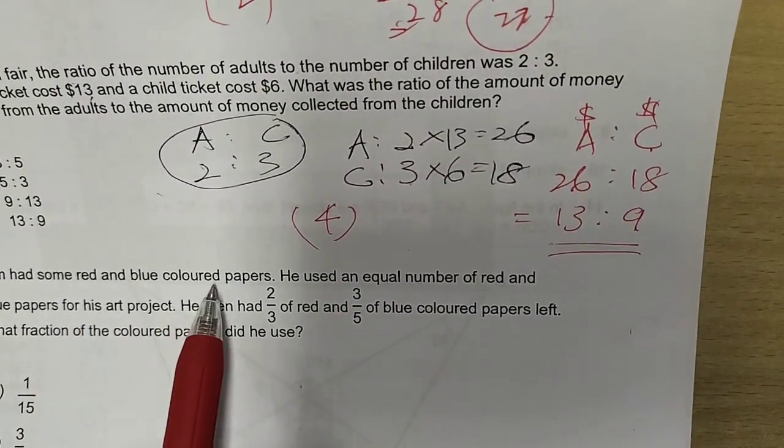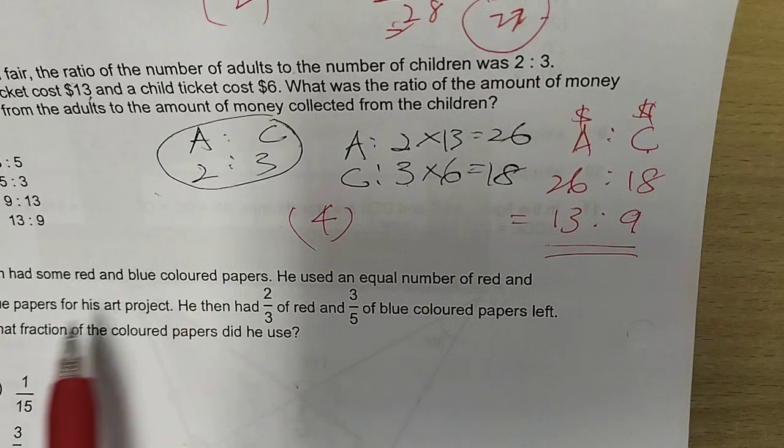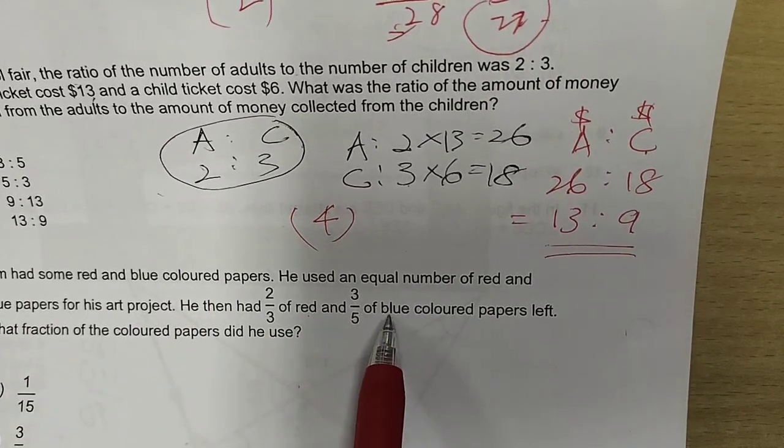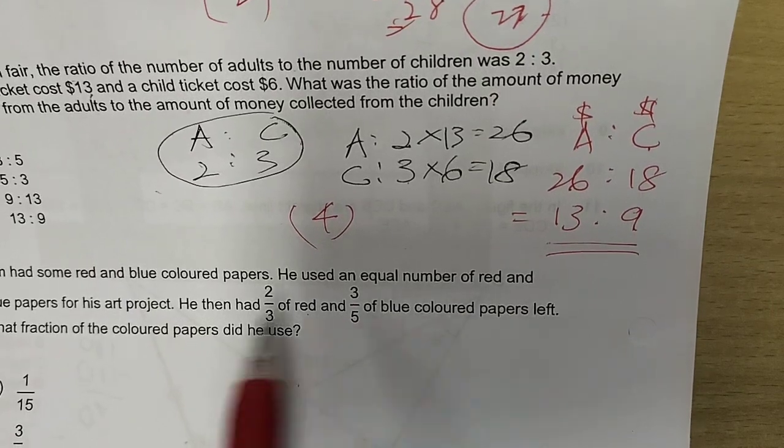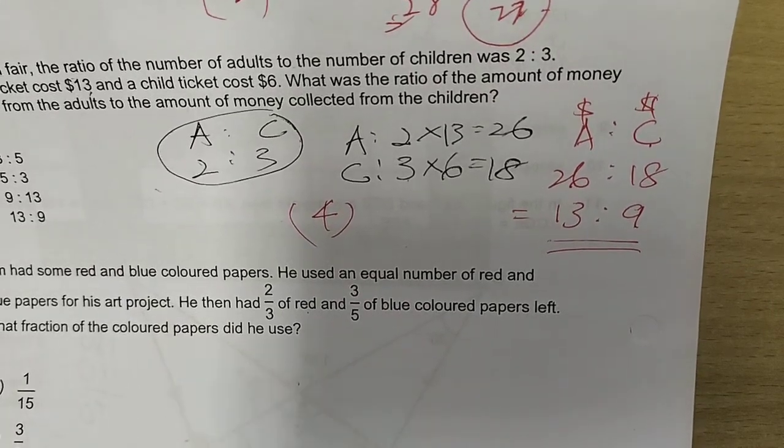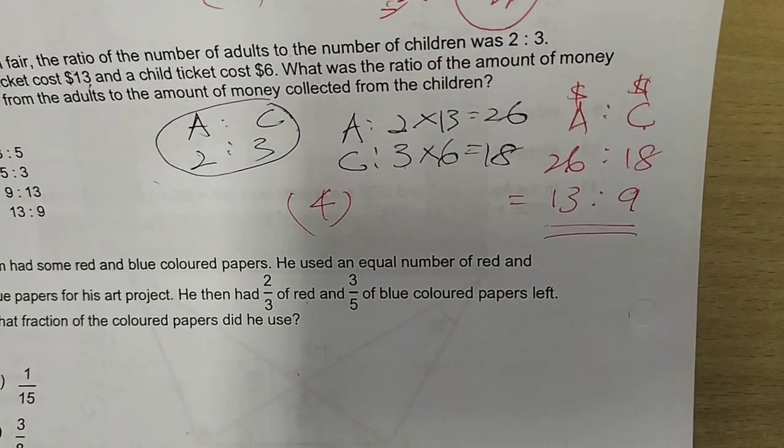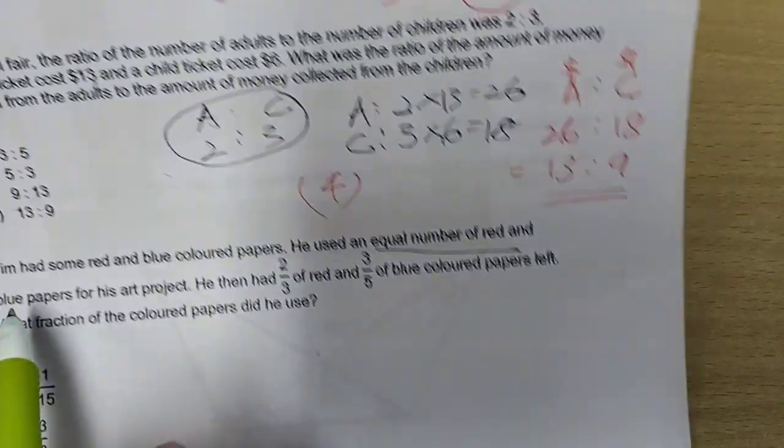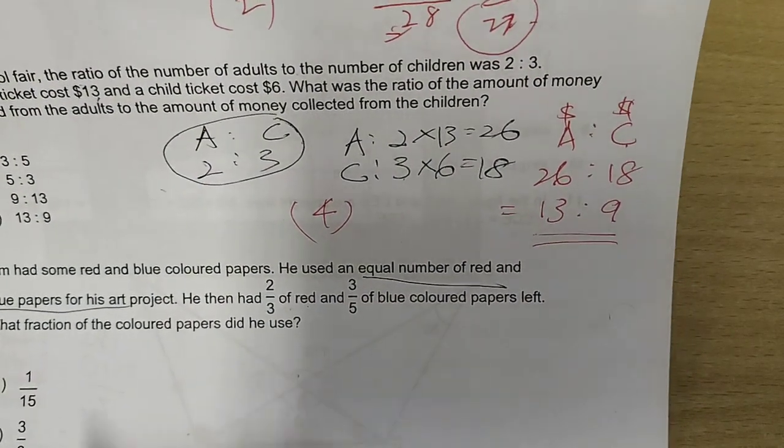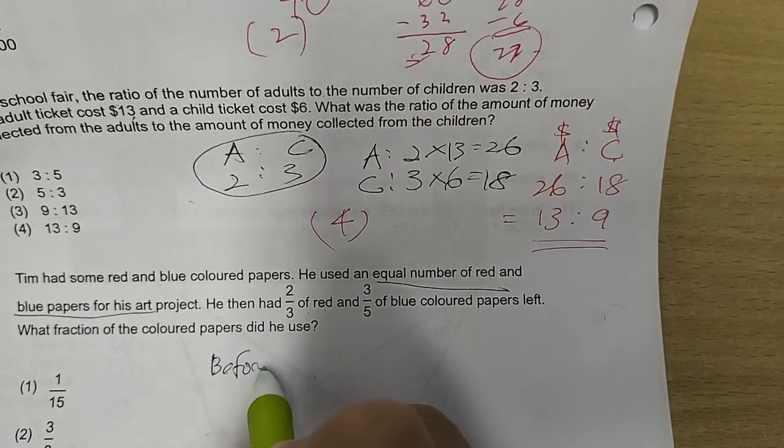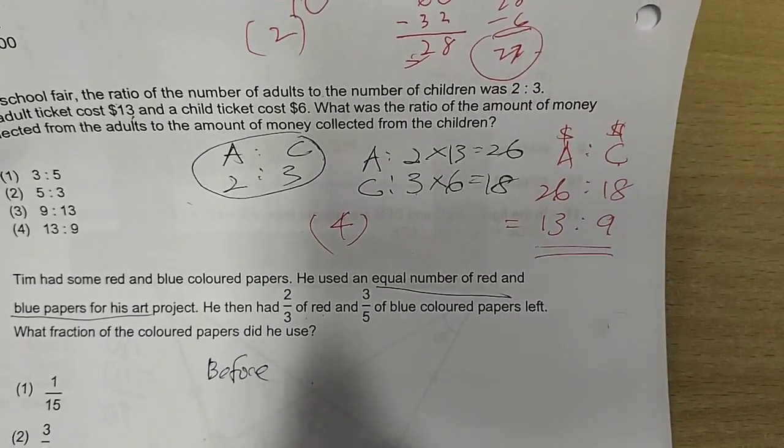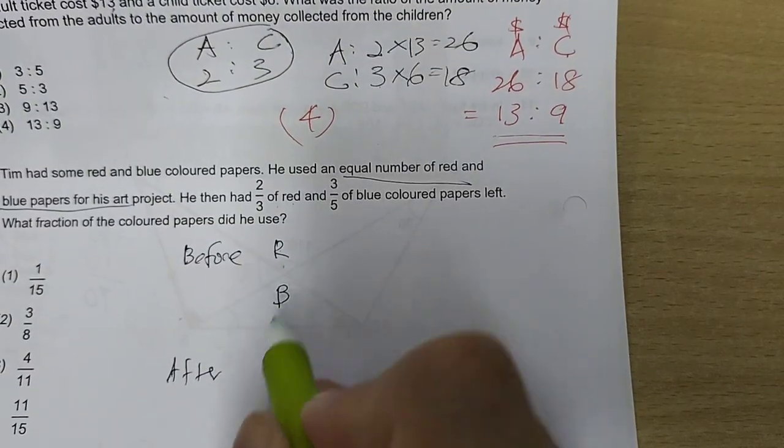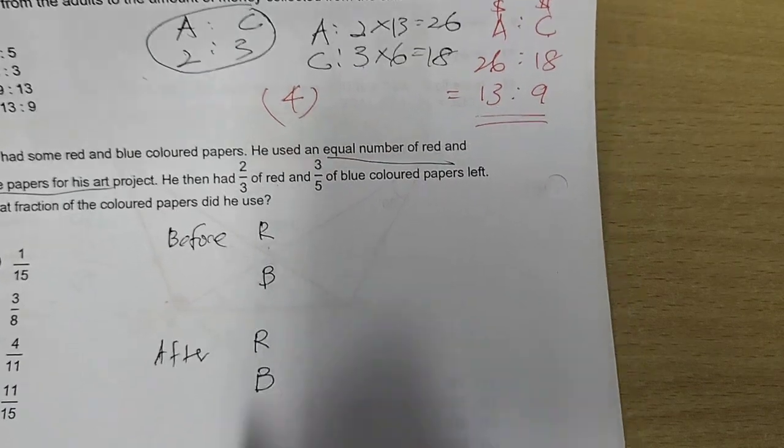Tim had some red and blue coloured papers. He used an equal number of red and blue papers for his art project. Then, he has two-thirds of red and three-fifths of blue papers left. What fraction of the coloured papers did he use? Now, the clue here comes from the equal number of red and blue papers were used and having left. Let's talk about before and after. Before, there were some red, some blue. After, also some red, some blue.